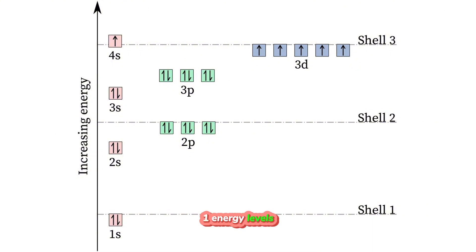Energy levels, principal quantum number. Electrons are organized into energy levels, often referred to as shells. These energy levels are numbered sequentially from the nucleus outward: 1, 2, 3, etc.